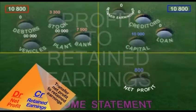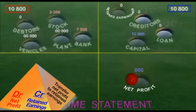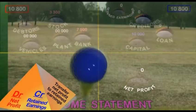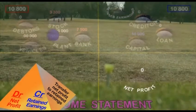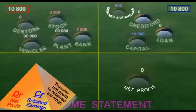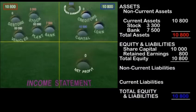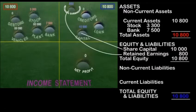A straight putt to net profit. By debiting net profit to 800, the balance changes to zero. And our whack of a drive to retained earnings, there in the distance on the balance sheet. Our balance sheet only reflects current assets and equity.